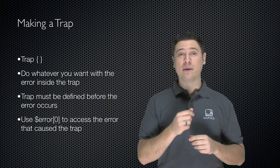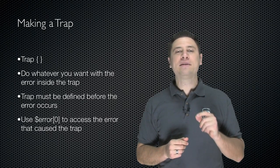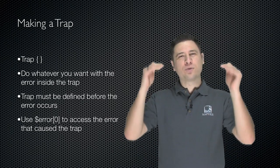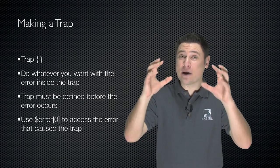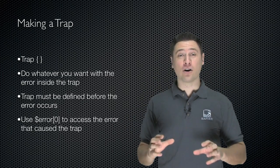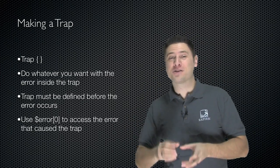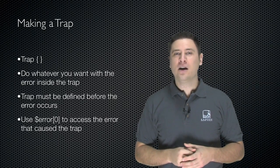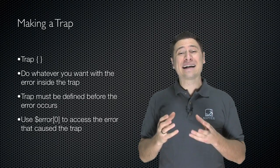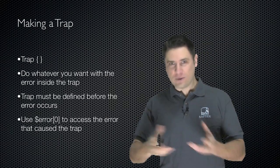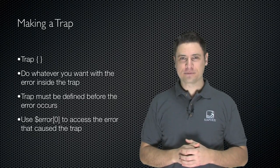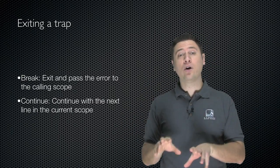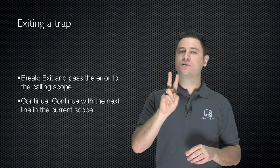The trap must be defined before the error might occur. When PowerShell reads through your script, it needs to see the trap before an error occurs so it knows where to go when an error happens. You use $error[0] to access the last error that occurred. At the end of the trap, after executing all your handling code, you have two choices.